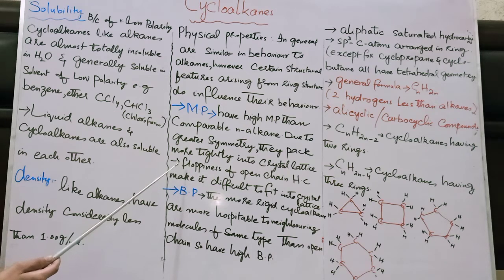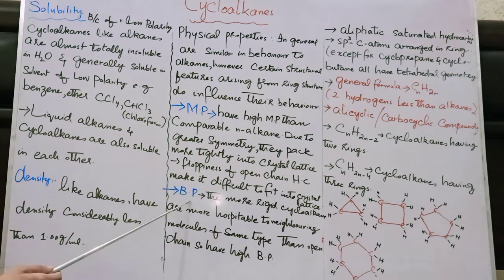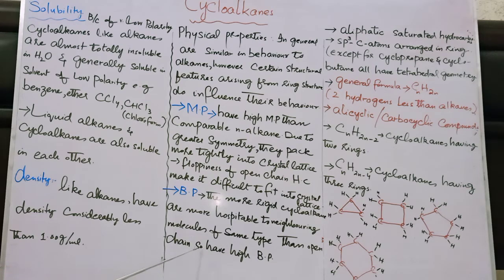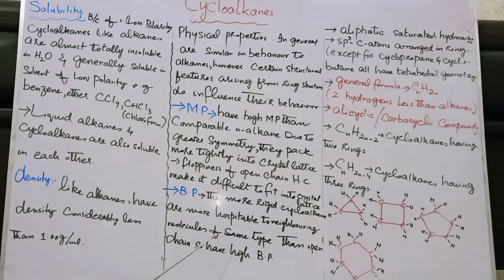For boiling point: the more rigid cycloalkanes interact more with neighboring molecules of the same type compared to open-chain hydrocarbons. As a result, they also have higher boiling points than comparable alkanes.